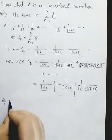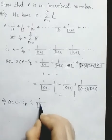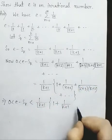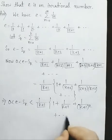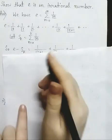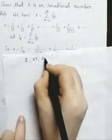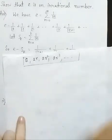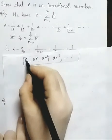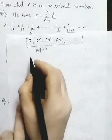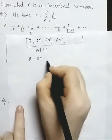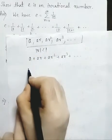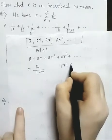Now this implies 0 less than e minus S_k less than 1 by factorial of k plus 1, times the quantity 1 plus 1 by k plus 1 plus 1 by k plus 1 squared plus dot dot. This is an infinite geometric progression with first term a and common ratio r, where the modulus of r is less than 1. The sum of this infinite GP is a by 1 minus r.